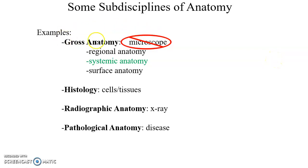Some sub-disciplines of anatomy include gross anatomy, which refers to things you can see with your eyes without a microscope. This includes regional anatomy, which focuses on a particular part of the body like the arm, and systemic anatomy, where you focus on a particular body system — skeletal, muscular, urinary — which is basically how this course will be broken down.